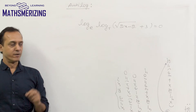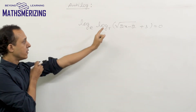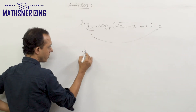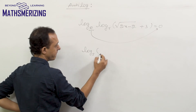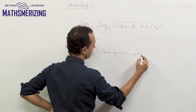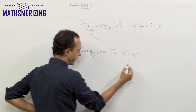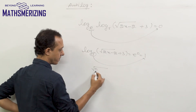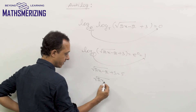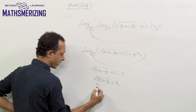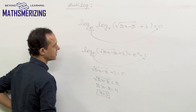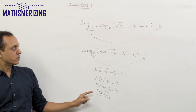Another question: solve for x. Taking antilog, we write log base 5 of (√(2x − 2) + 3) = e^0 = 1. Taking antilog again for base 5: √(2x − 2) + 3 = 5, so √(2x − 2) = 2. Squaring both sides: 2x − 2 = 4, giving x = 3.